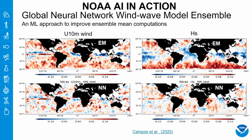The next example is the use of a neural network training non-linear ensemble means to improve global wind and wind wave forecasting. EM in those maps stands for standard ensemble mean, and NN stands for neural network non-linear ensemble mean. The red is over-estimation and blue is underestimation compared to altimetry observations. You can learn more from the paper by Campos et al., 2020.